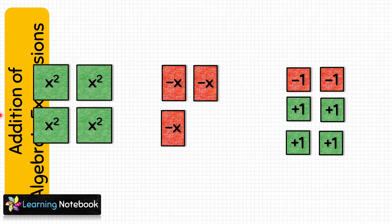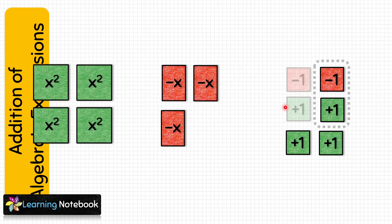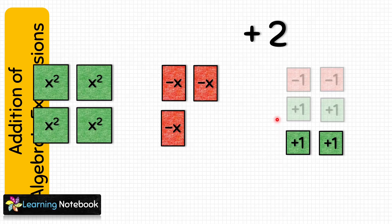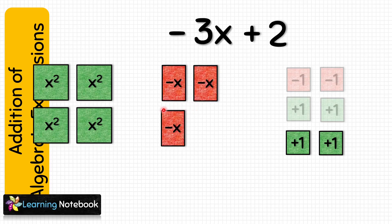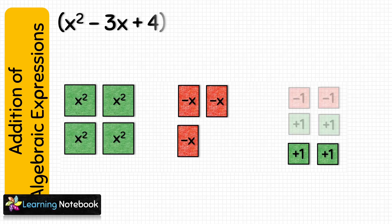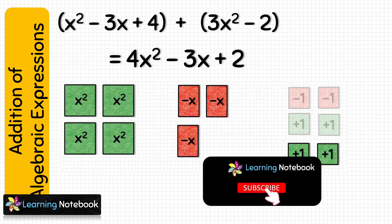Now, to add these two expressions, let's combine the cut-outs and place them as like terms as shown here. Next, we will cancel the red and green cut-outs of the same size. So this minus 1 and plus 1 gets cancelled, and this one also gets cancelled. We are left with 2 green small squares, which means plus 2. Here, there is nothing to cancel, so let's just add them and we get minus 3x. Similarly, we will add these 4 big green squares and get 4x square. So the sum of these two algebraic expressions is 4x square minus 3x plus 2.